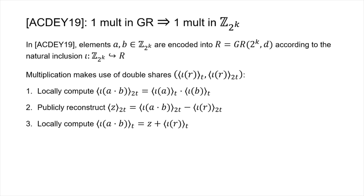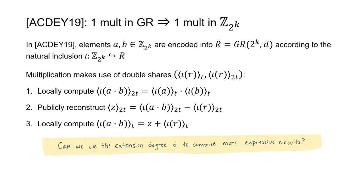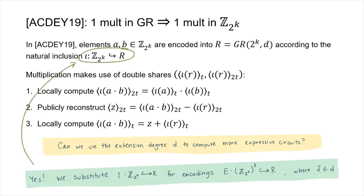Even though you want to do just a small multiplication, you're paying the overhead for working in this larger ring. So a question is: can you use the fact that you're working over this larger ring to do more than just one multiplication — can you compute something more expressive, like a circuit? In this paper we do exactly that: instead of mapping just a single Z_{2^k} element into R, we now encode multiple elements — some parameter delta of them — into R.